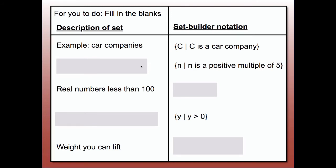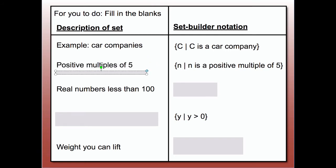First set: the set of all N, where N is a positive multiple of 5. That's pretty obvious — that's just the positive multiples of 5. That's the way you would describe that set.